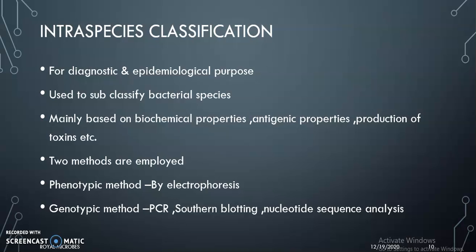Intraspecies classification is used to subclassify bacterial species for diagnostic and epidemiological purposes. Characters used include biochemical properties, antigenic properties, toxin production, etc. Two methods are employed: the phenotypic method by electrophoresis, and the genotypic method by PCR, southern blotting, nucleotide sequence analysis, etc.